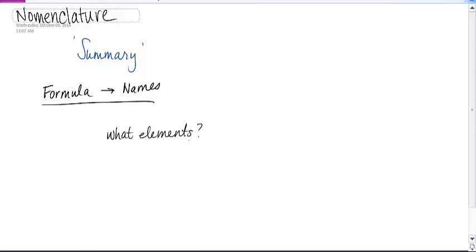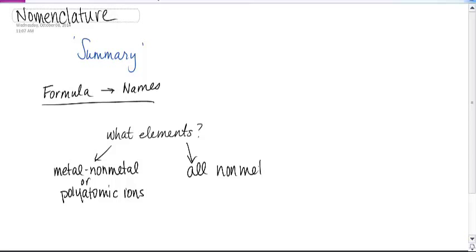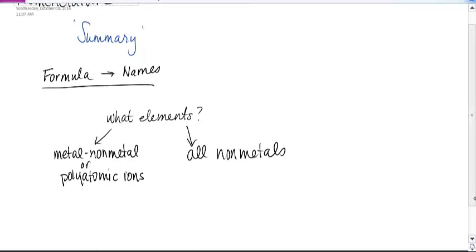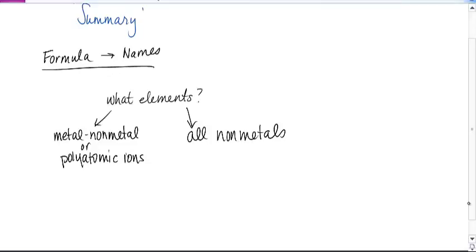And the reason that's important is because there's really three main categories. Either it's a metal with a non-metal, or it has one of those polyatomic ions in it that you memorized, because that's going to be in the same kind of category, or it's all non-metals. So we're going to start with the metal and non-metal, or it has a polyatomic ion in it.